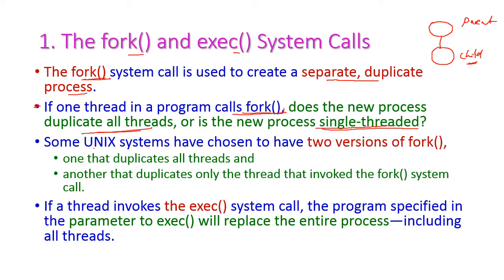To overcome this particular problem, the Linux system has two versions of fork. The first fork will duplicate all the threads, and the second version of fork will duplicate only the thread that invoked the fork system call. The second system call is exec.